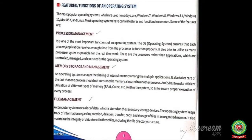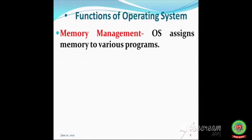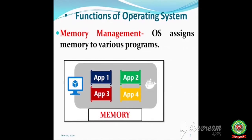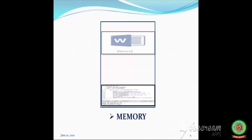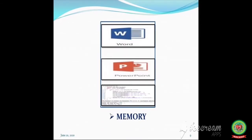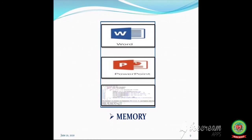The next function of an operating system is memory storage and management. Memory is the storage space used to store data and instructions. An operating system manages the sharing of internal memory among multiple applications. It also takes care of the fact that one process should not consume the memory allocated to another process. Here, process means a running program.